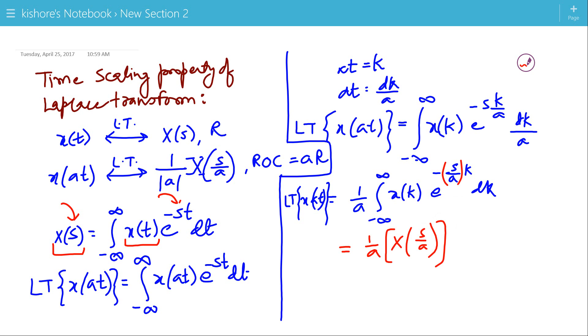So in general, if A is positive or negative, every time we will get the positive value of A here. So the Laplace Transform of x(at) is 1 by mod A, X of S by A, and the new ROC is A into R.